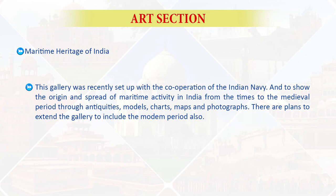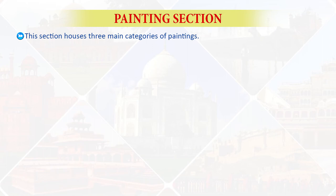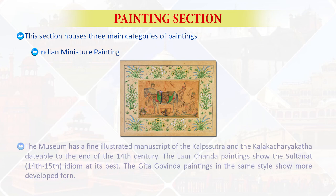Next is the maritime heritage of India. This gallery was recently set up with the cooperation of the Indian Navy to show the origin and spread of maritime activity in India from ancient to medieval times, through antiquities, models, charts, maps, and photographs. There are plans to extend the gallery to include the modern period also. Next is the painting section, which houses three main categories of paintings.